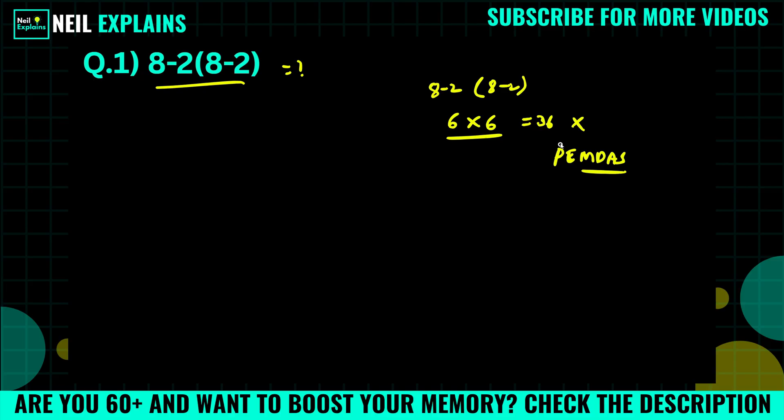This part, PEMDAS stands for... times, this first 8-2, 8-2 which will give 6. Okay, now 8 minus, here nothing but multiply 2 into 6.